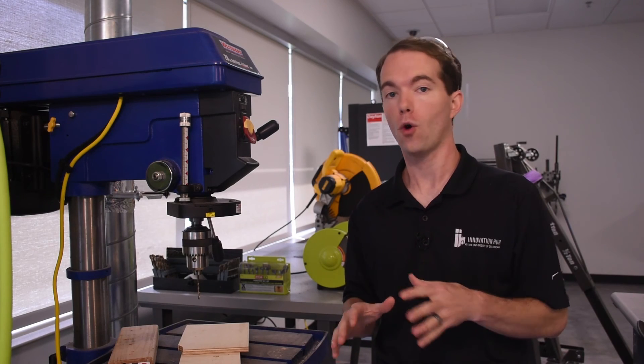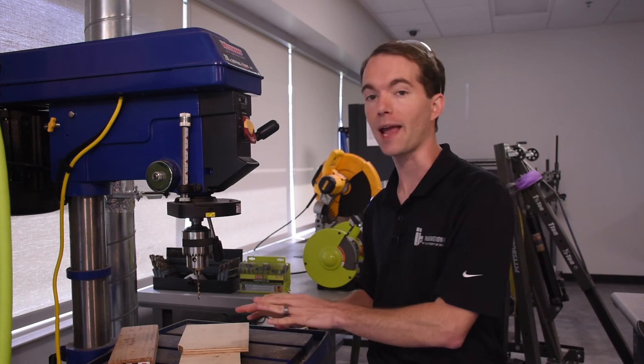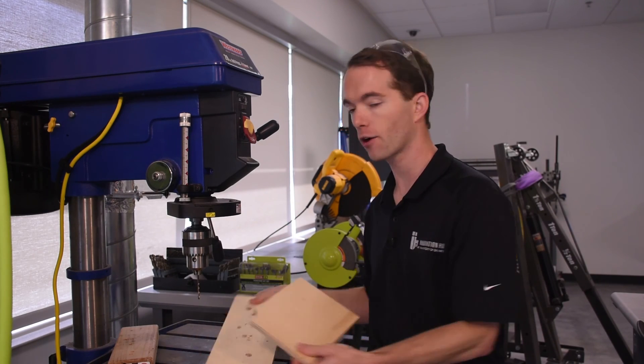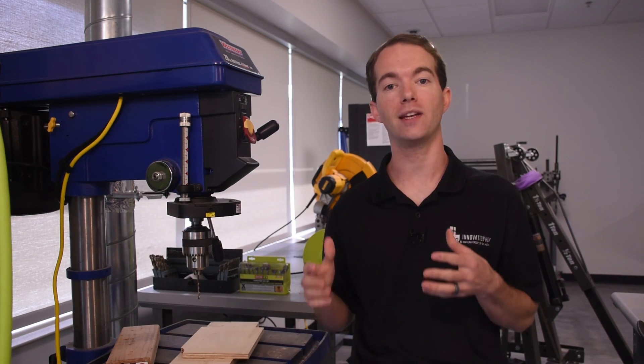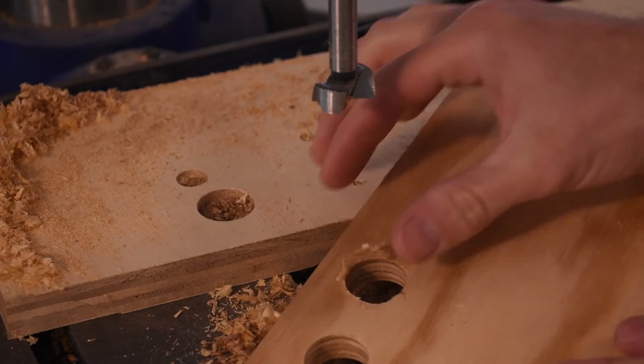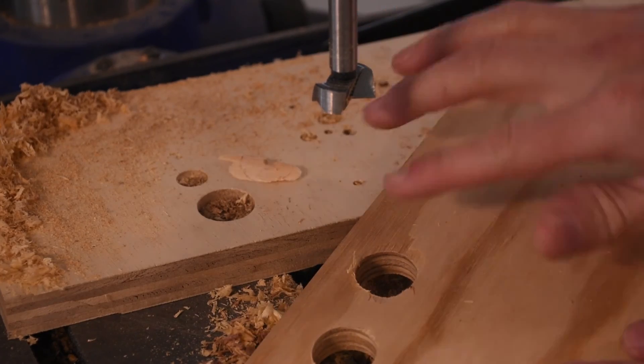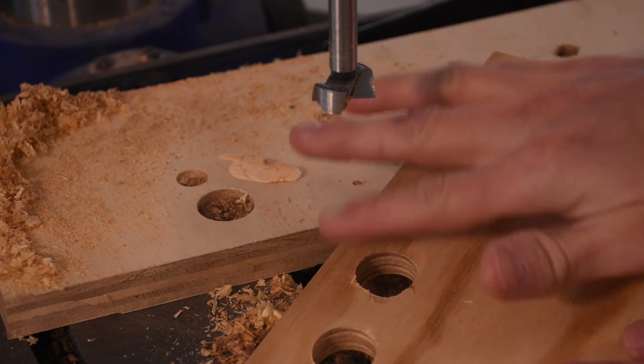Now one other thing you want to do almost always, any time you're drilling anything, is put a sacrificial piece of wood underneath whatever it is you're going to drill. Because you want to eliminate tear out. Tear out is the nasty shards that come off the edge of your hole whenever the bit comes through the bottom surface.